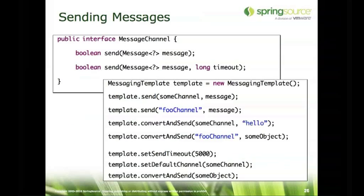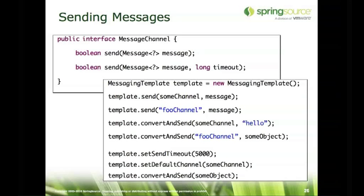To send messages, you can obviously interact directly with the message channel, but typically you would wrap this in the messaging template. It's going to be consistent with the approach in JMS template, AMQP template, and other places in Spring, with similarly named methods. The difference is that instead of providing a JMS destination name, we're just providing a channel name or channel instance. You can call convert-and-send, in which case it delegates to a message converter. At the bottom, you can set a default channel so you don't have to provide that as an argument — if you're always connecting to a single channel, that simplifies your usage.